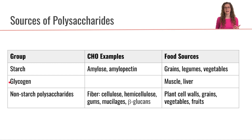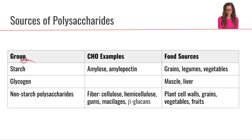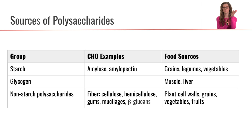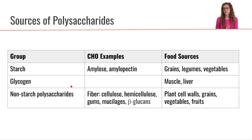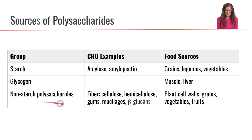Now let's take a look at sources of polysaccharides. The first major category is starch, and we know that starch from plants comes in the form of amylose — the long glucose chains — or amylopectin, which has some branching with alpha-1,6 glycosidic bonds. We get starch from grains, legumes, and vegetables, primarily in the endosperm section. There's also glycogen, which is the animal storage form of glucose, coming from muscle or liver cells — so from animal flesh.